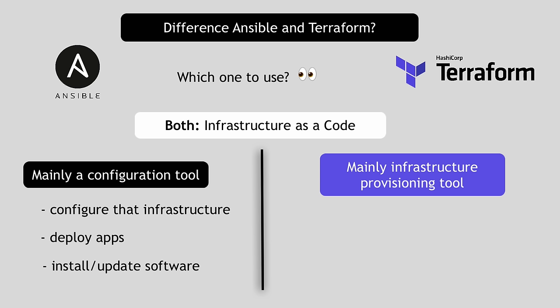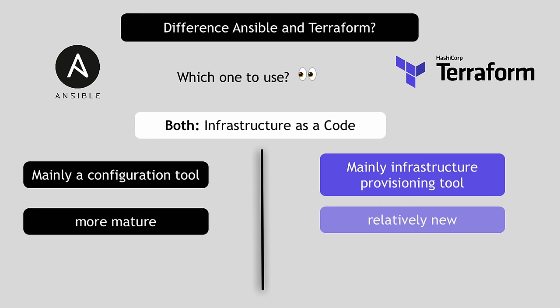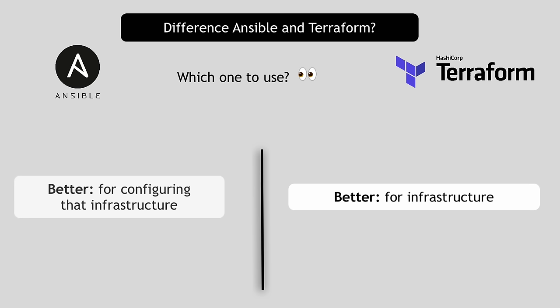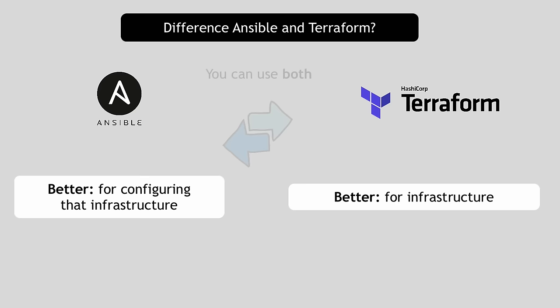There are overlaps between what each tool does, which creates confusion. Other differences to consider: Ansible is more mature and Terraform is relatively new and also changing dynamically. Terraform is much more advanced in orchestration. To summarize: Terraform is a better tool for provisioning infrastructure, and Ansible is a better tool for configuring that infrastructure and deploying applications and services. It's common practice for DevOps engineers to use a combination of both tools — using each for its own strength instead of just one tool.